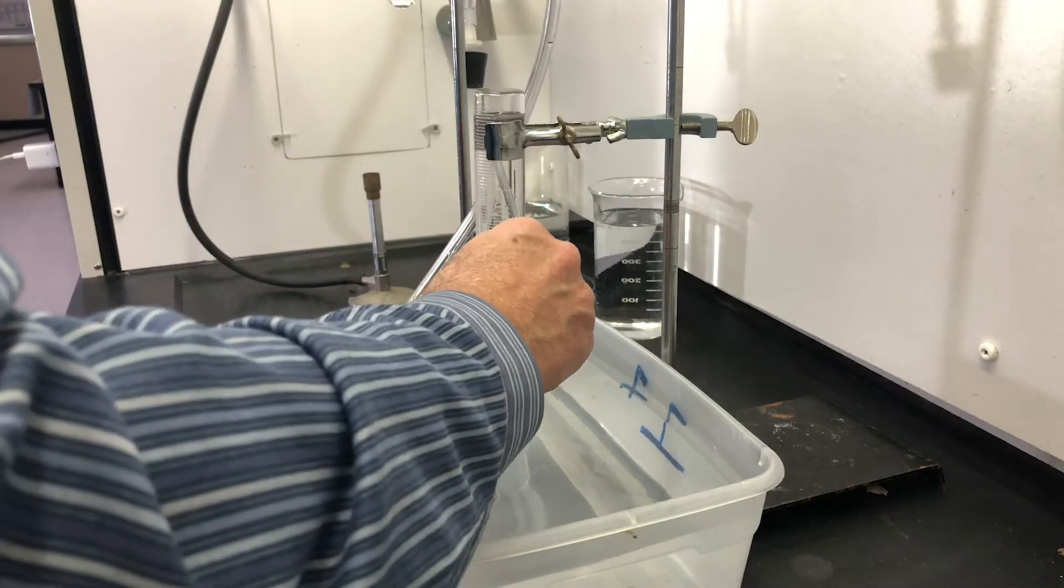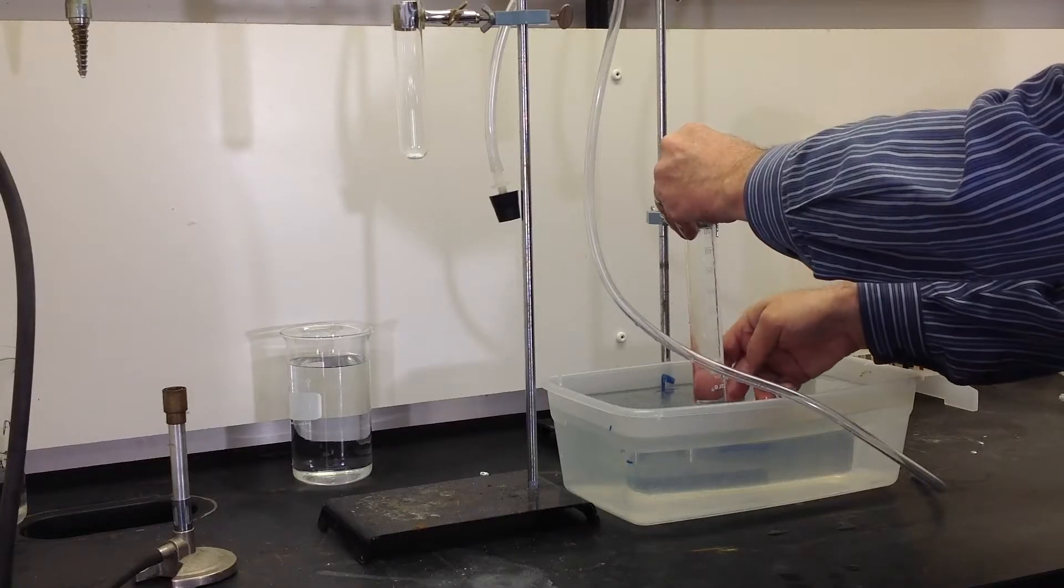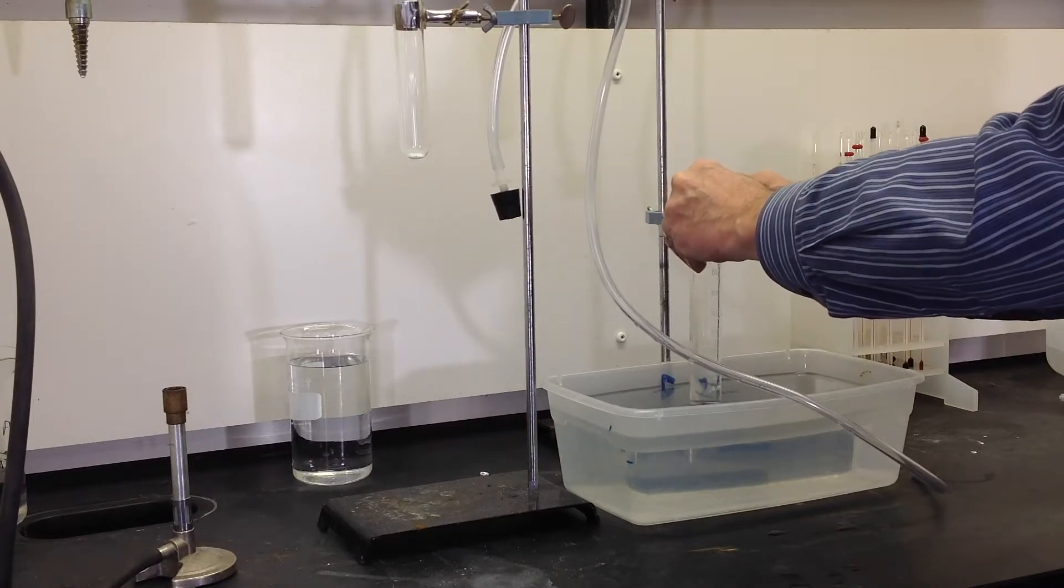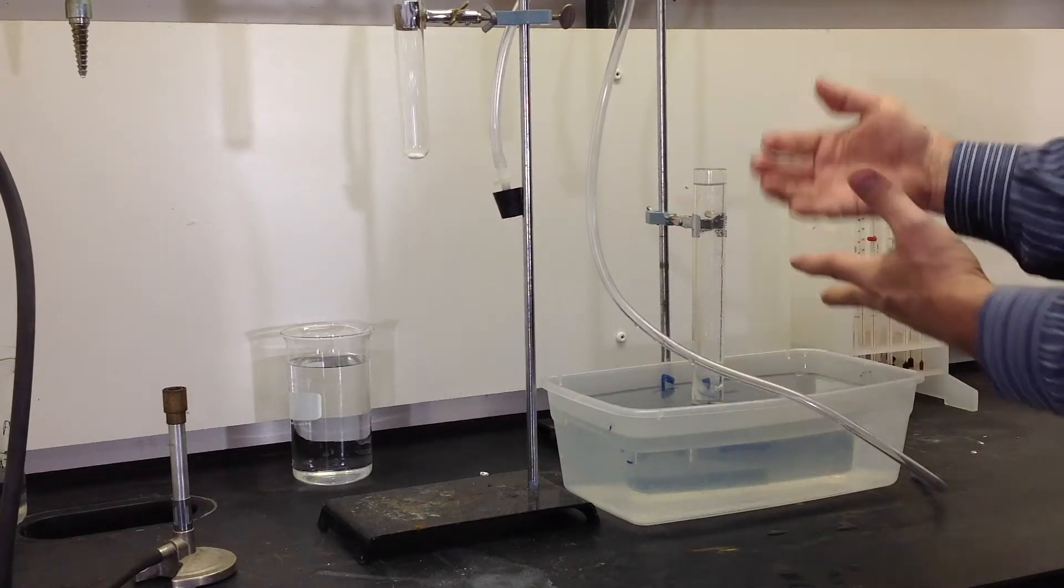Now when I raise this up, I don't want to break the surface of the water with the graduated cylinder. I want to make sure that the mouth of the graduated cylinder stays below the water surface so that I can create this column of water.